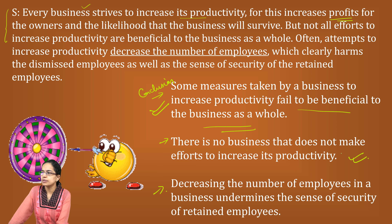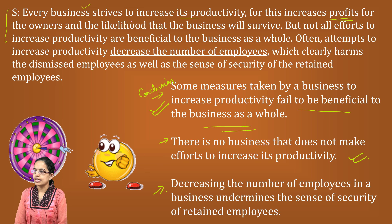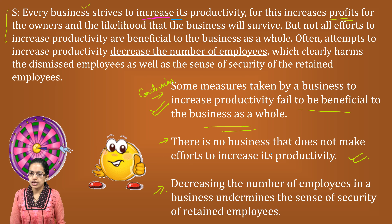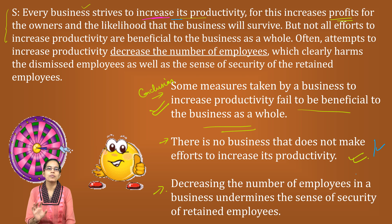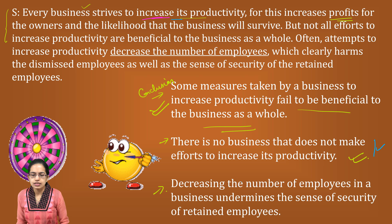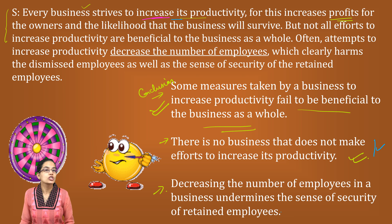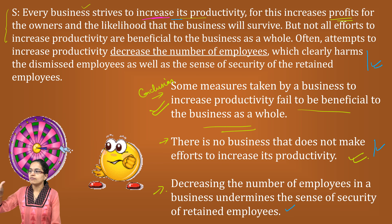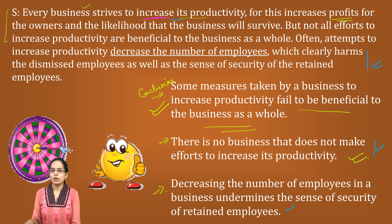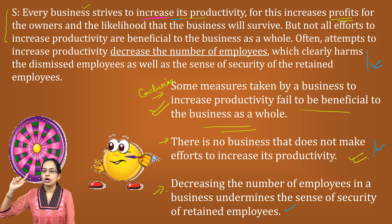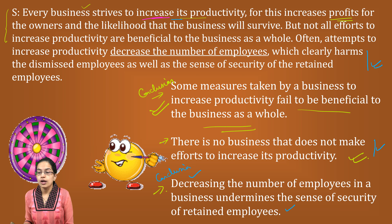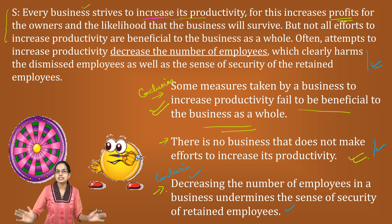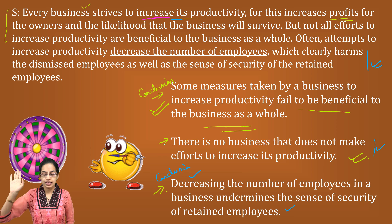The next conclusion says: there is no business that does not make efforts to increase productivity. Again, it's correct — the first line says every business strives to increase productivity. The last conclusion says: decreasing the number of employees undermines the sense of security of the retained employees. That is also correct from the last sentence. So all three conclusions turn out to be true, and all were hidden there itself in the statement.